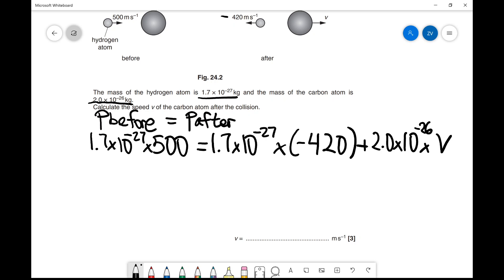We have an equation with just one unknown, so we need to rearrange for v. My first step is to bring 1.7 × 10^-27 × -420 over to the other side.